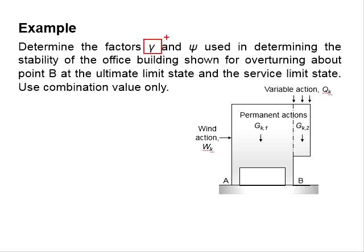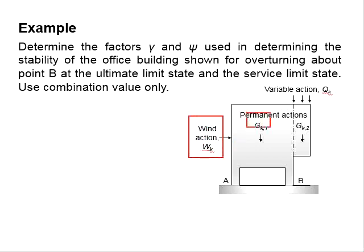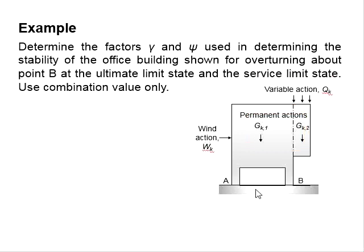Gamma represents the factor of safety for the actions, while psi represents the factors for the combined value, which is represented by psi_0. The office structure is subjected to wind actions, permanent actions, and variable actions. You are asked to check for the overturning stability at point B. You may pause the video to work out the solution.